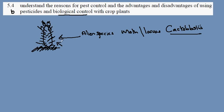So this is an example of controlling a pest — in this case a plant — by a herbivore. This is called biological control. In this case we are not using pesticides.